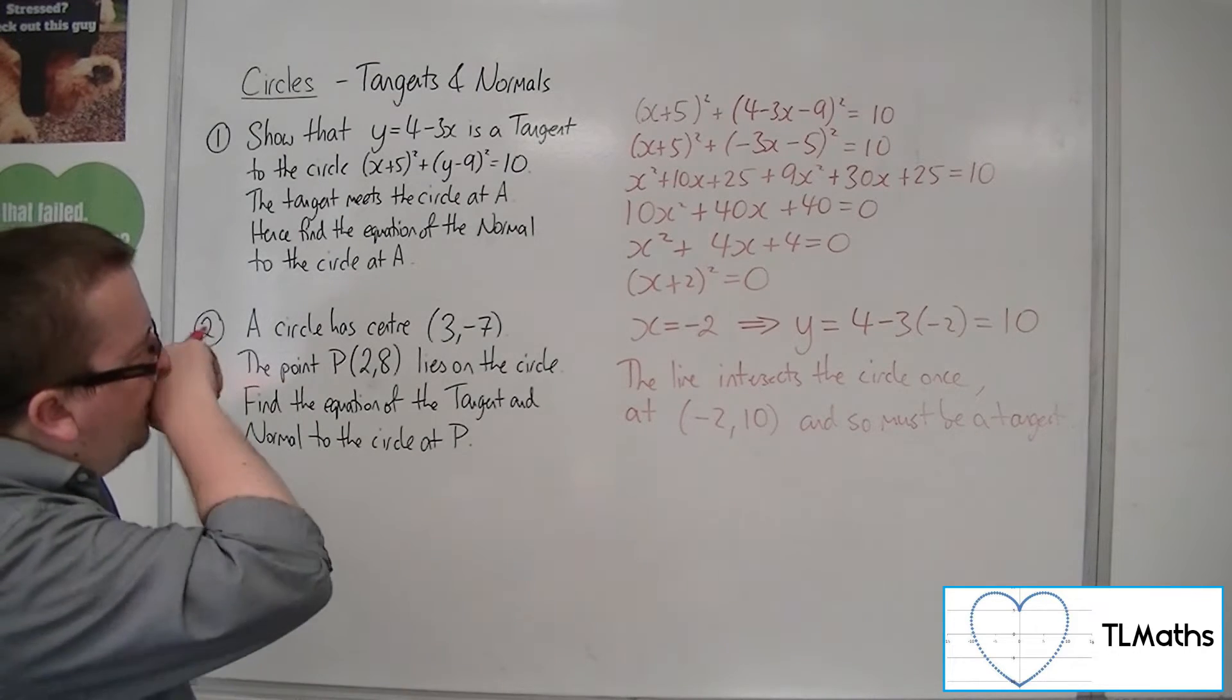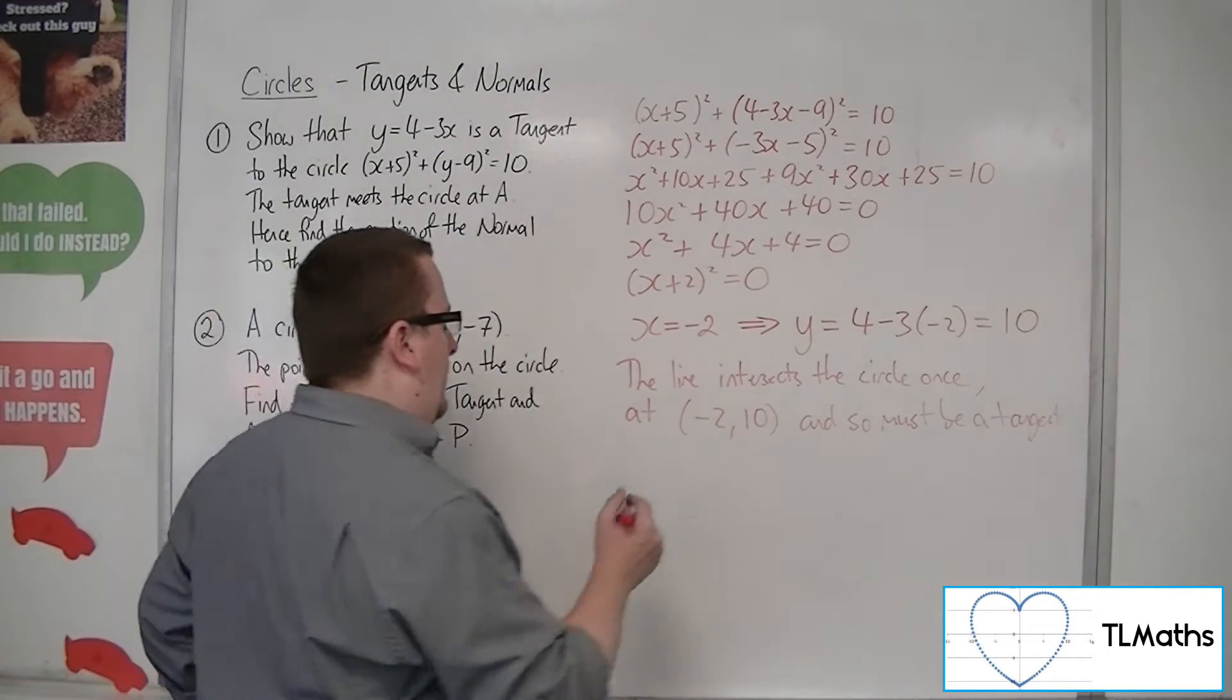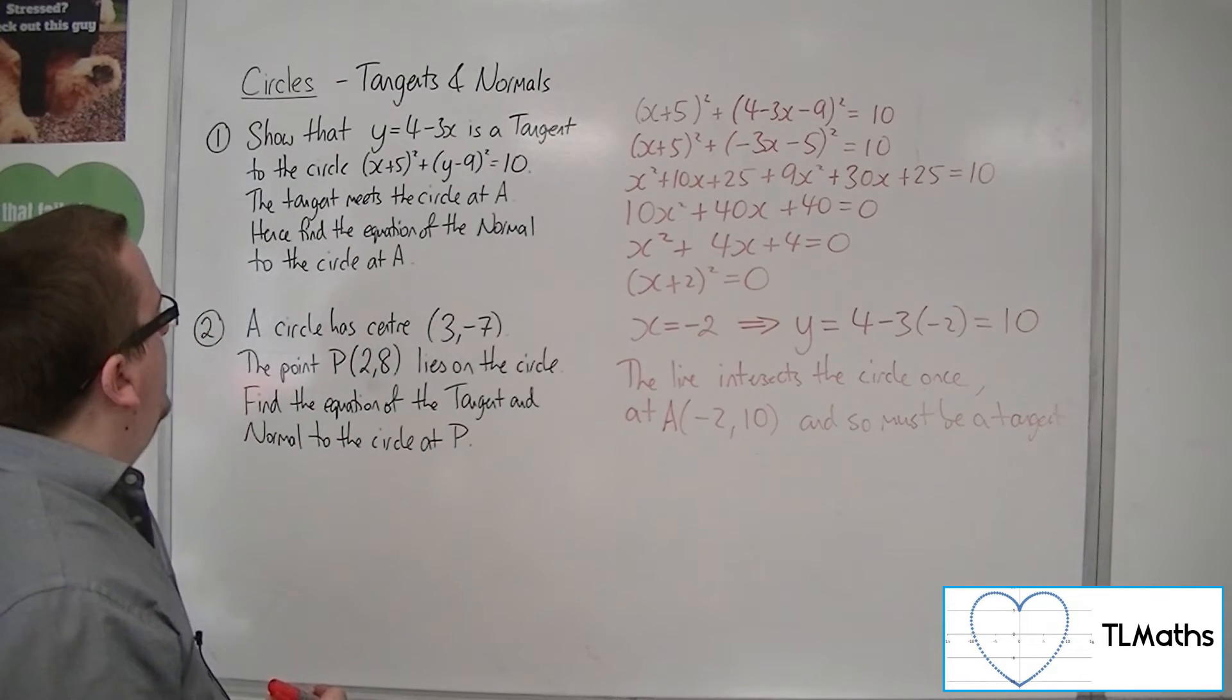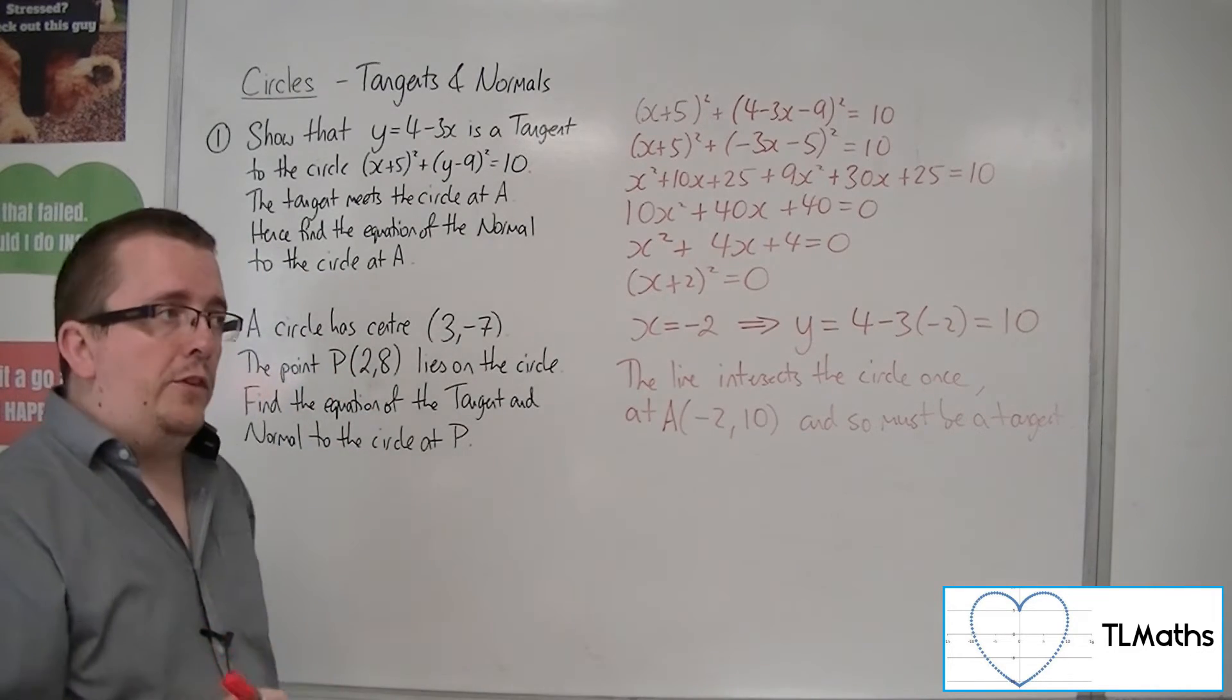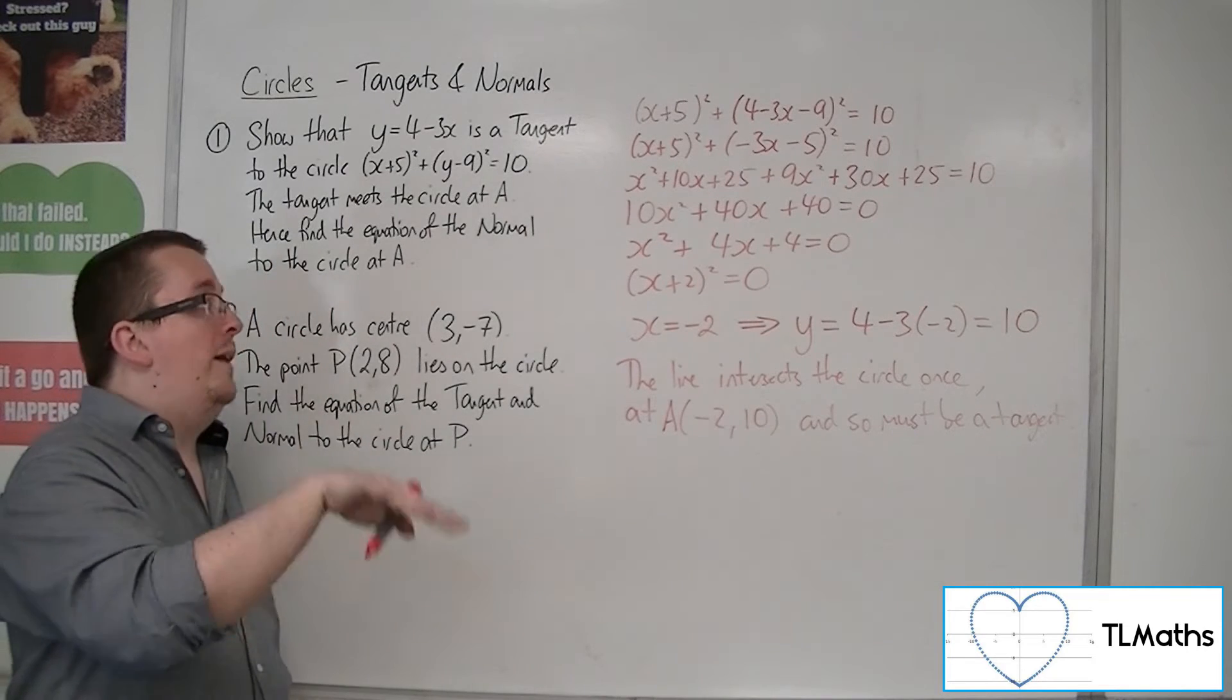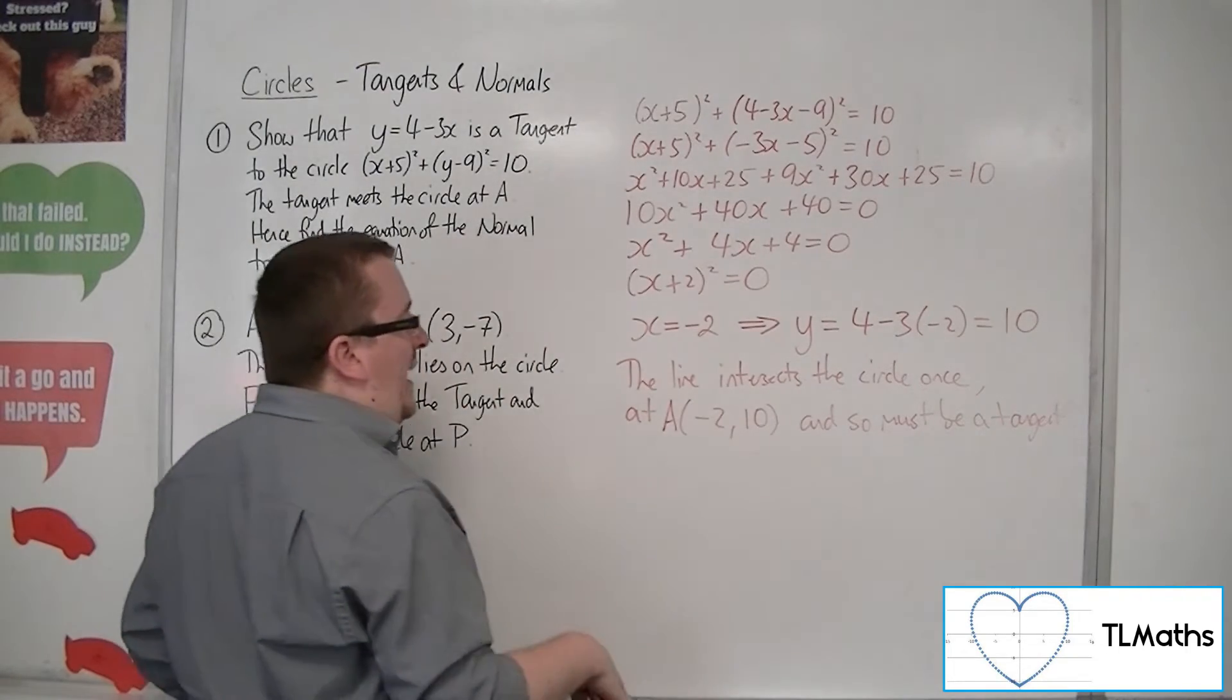So seeing as I have the coordinates of A now, so that's A. And I know that the equation of the tangent is y equals 4 minus 3x. So that means that the gradient of the tangent is minus 3. So the gradient of the normal will have the negative reciprocal, so it'll be 1 third. So I can use the y minus y1 equals mx minus x1 for this.